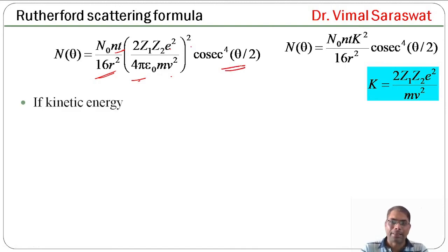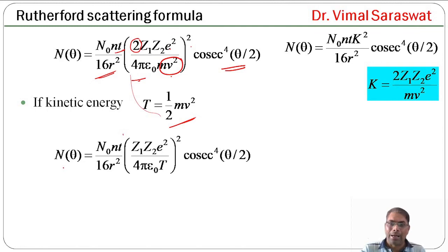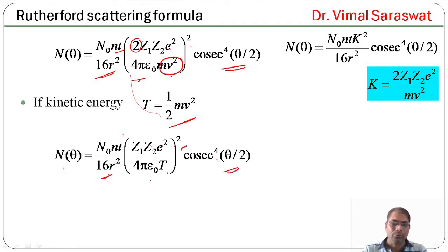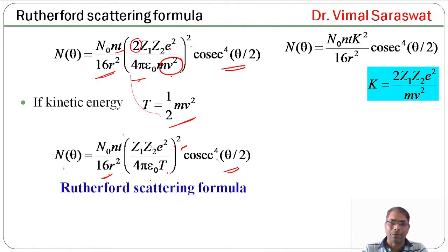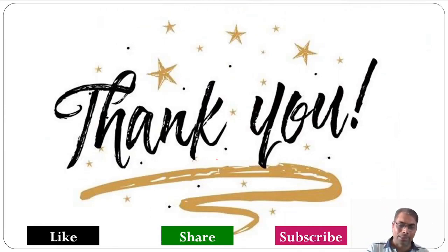This is our Rutherford scattering formula. Note that kinetic energy T = (1/2)mv². Here we end our session. In today's session we have discussed about the Rutherford scattering formula. Goodbye.